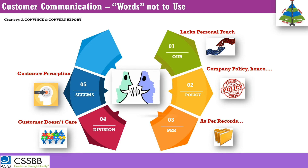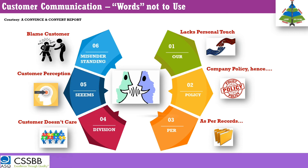When you phrase a statement as 'it seems you are unhappy' or 'it seems you had a bad experience,' you are dismissing the customer's experience as theirs alone — not something the organization owns. You are alienating the customer. Finally, the blame game: saying 'I'm so sorry you have misunderstood the process' or 'you misunderstood the documents to submit' means you are blaming the customer. So the words to avoid are: 'our policy,' 'per division,' 'it seems,' and 'misunderstanding.'